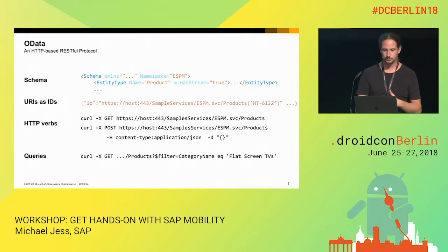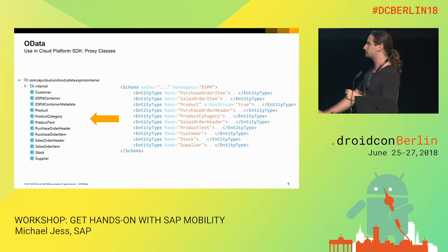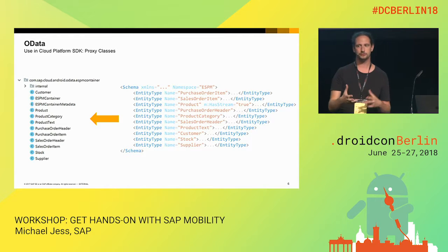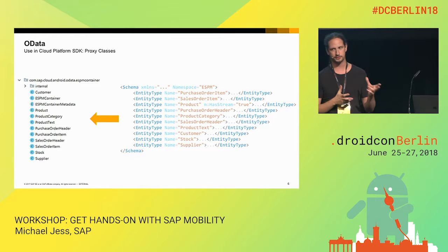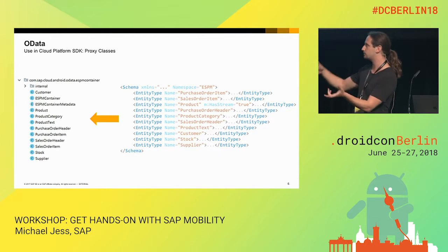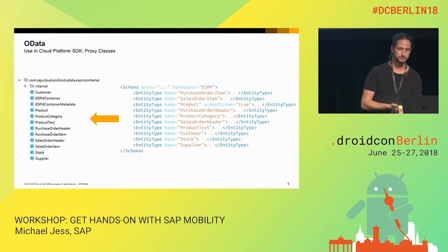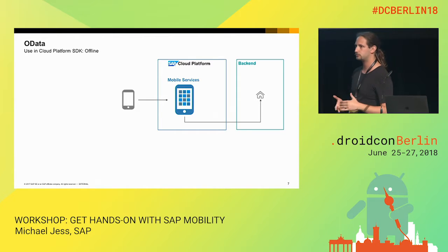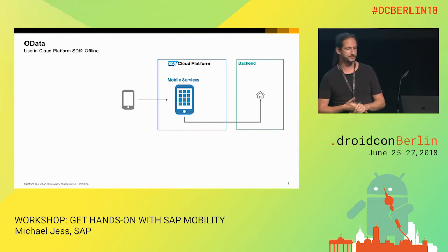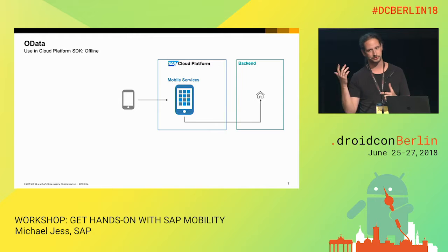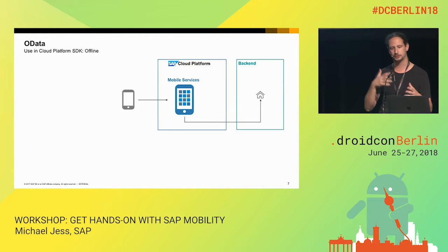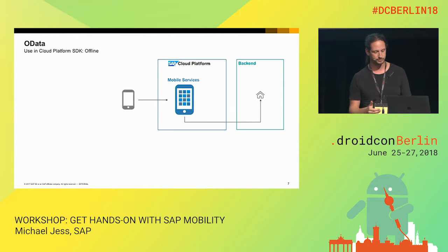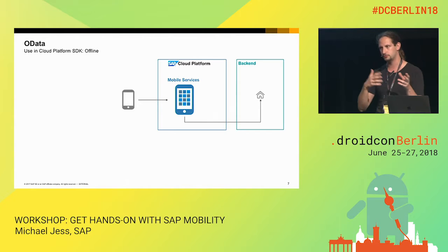So why is that important for our mobile stuff? Because our tooling uses this information — the schema, for instance — and generates a bunch of classes for you. We are generating a strongly typed interface so you don't need to mess with HTTP requests and all that. We give you a proper data model generated from the actual schema of the service. The second thing — and that is more complicated — is offline. Offline in SAP mobility relies strongly on OData, and it has a lot to do with the schema, because we are essentially generating a database. I just want to run quickly through the flow so you understand how this offline works in order to use it properly.